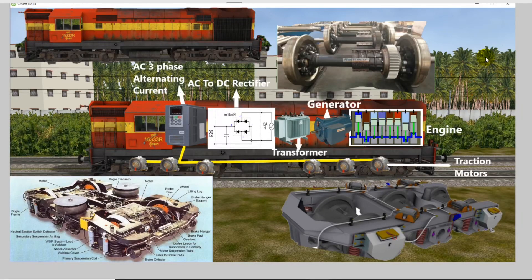In this diagram, we are going to talk about the diesel locomotive. It is set up a lot on the inside.